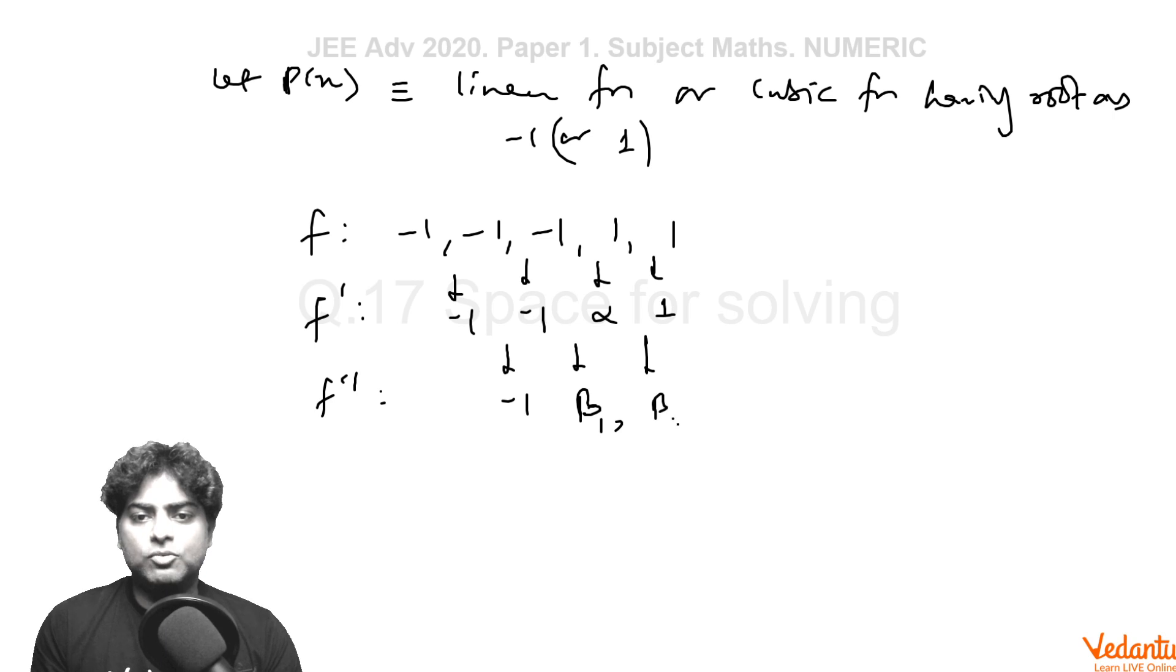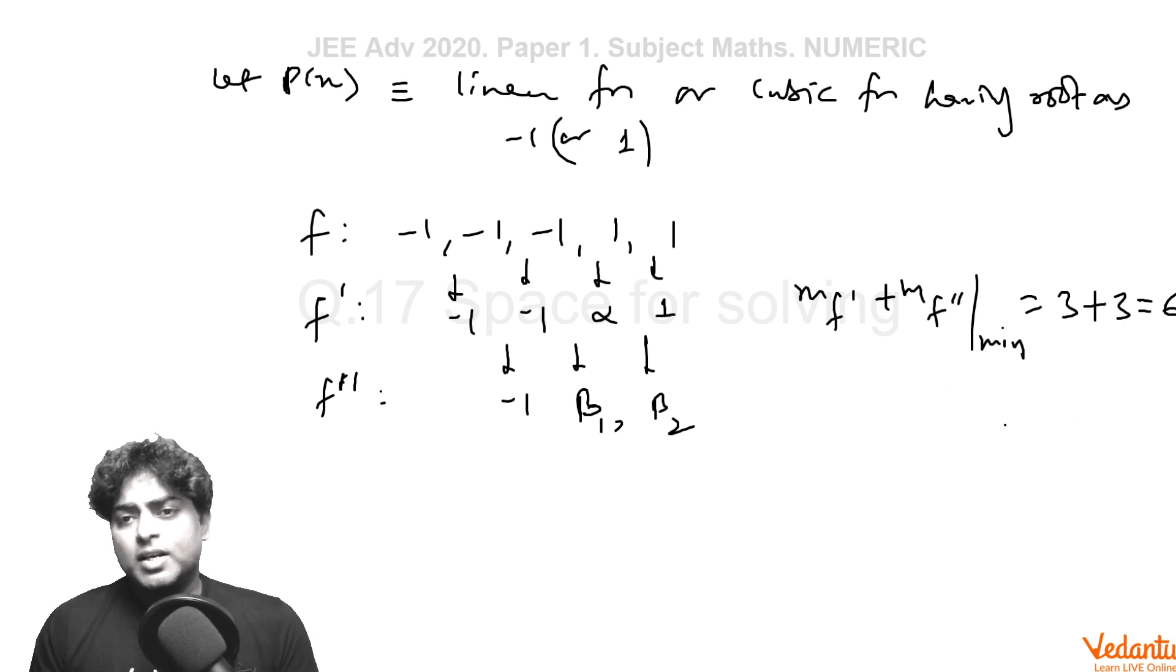So m_f' in this case plus m_f'' minimum. m_f' is the minimum number of distinct roots, if I talk about distinct roots, it is minus 1, alpha, 1, that is 3. And for f'', it is minus 1, beta₁, beta₂, that is also 3. So it is 6. So minimum here we are getting the value of m_f' plus m_f'', even if we have taken the root of linear or cubic as what f already has as its roots, minus 1 or 1. In that case also, we are getting an answer more than 5.